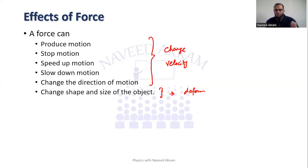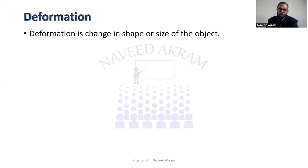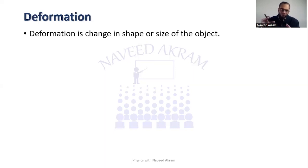If a force changes the shape or size of an object, we say that force can deform the object. Deformation is the change in shape or size of an object. For example, if you have a rubber ball and you press it by applying a force, it gets deformed — its shape changes. In other words, we say that it is deformed.